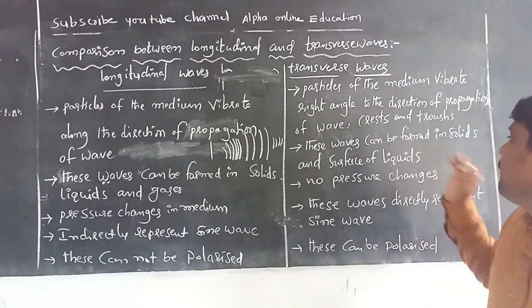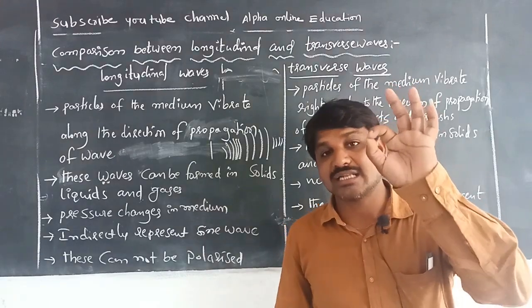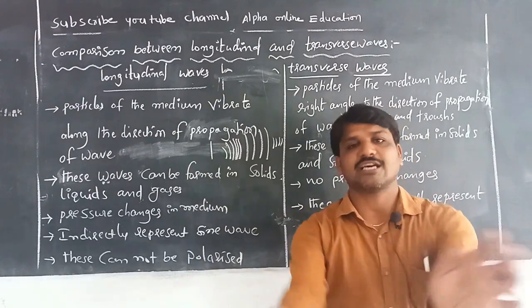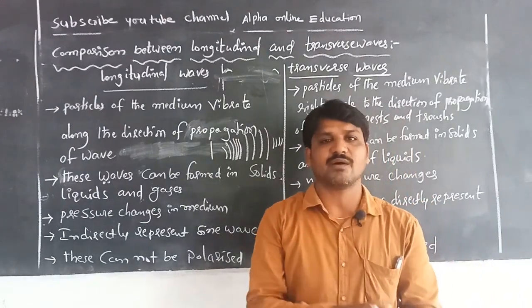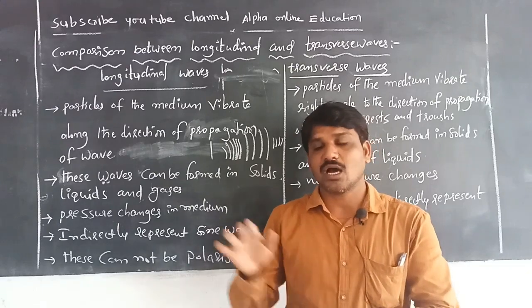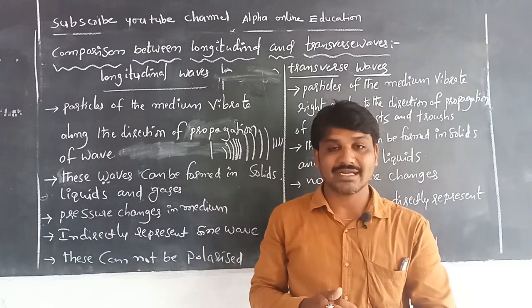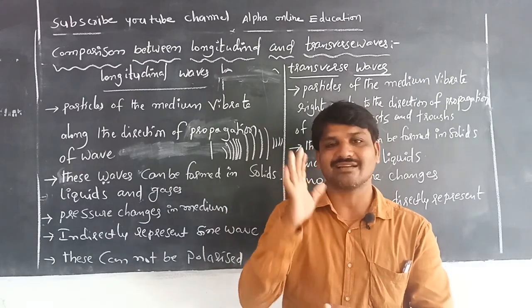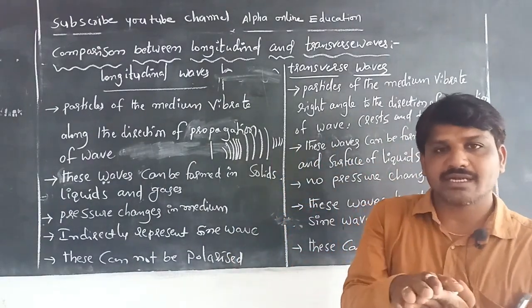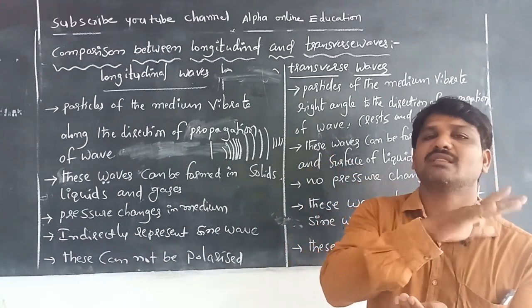Transverse waves can mostly be formed in solids and on the surface of liquids. In oceans or lakes, whenever water waves are moving, they travel on the surface only — the rest of the water inside remains stationary. So we can say that in liquids, only the surface forms transverse waves.